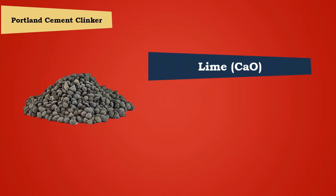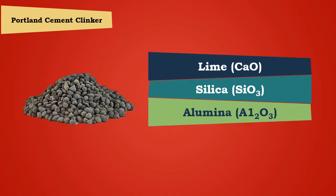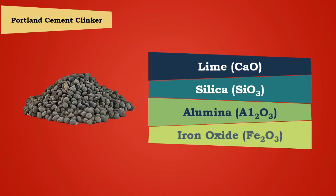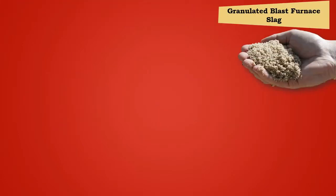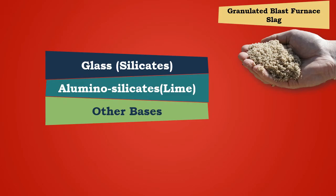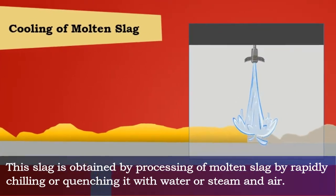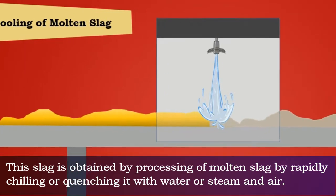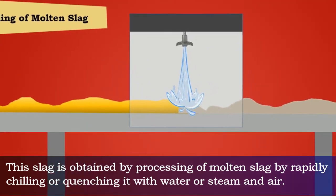Generally, Portland cement clinker is a homogeneous mixture of materials which principally contains lime (CaO) and silica (SiO2), with a smaller proportion of alumina (Al2O3) and iron oxide (Fe2O3). Granulated slag is a non-metallic product consisting essentially of glass containing silicates and alumino-silicates of lime and other bases.